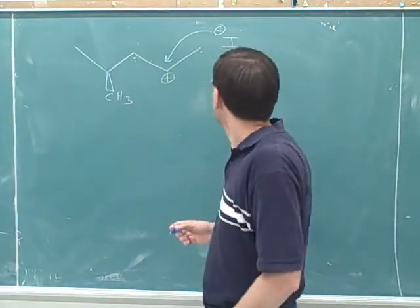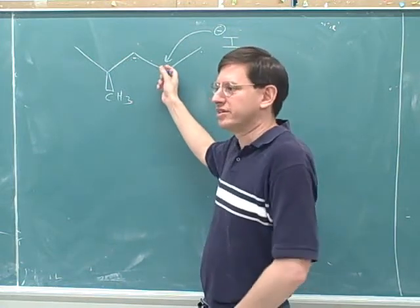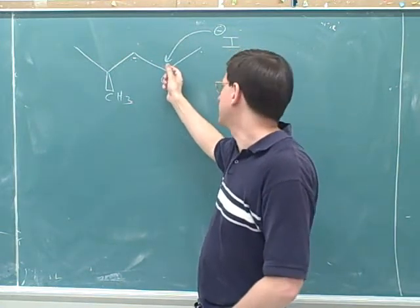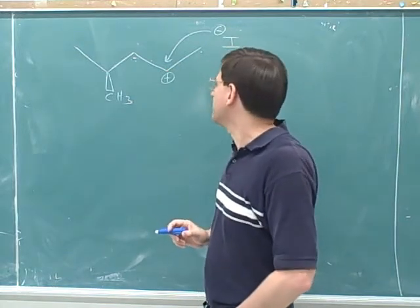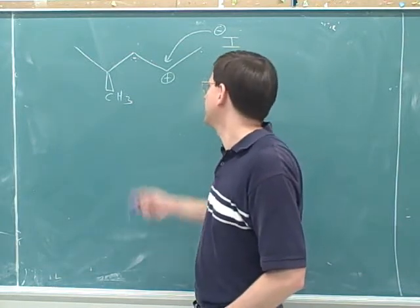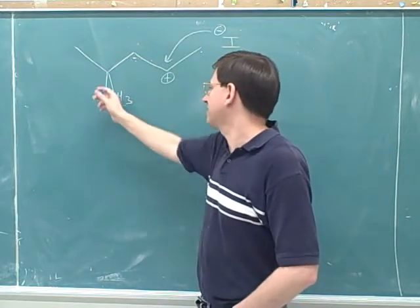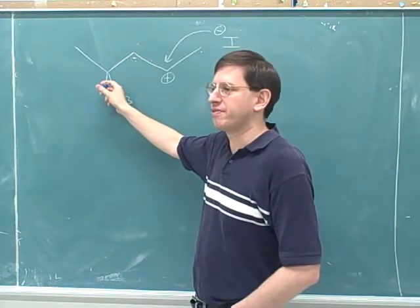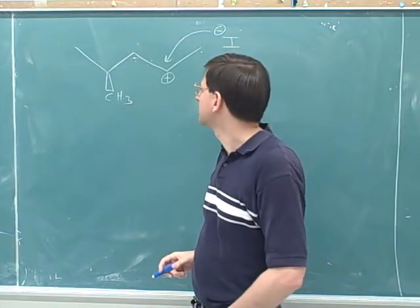So to answer your question, this is trigonal planar and we know with trigonal planar we would normally expect the iodide can attack from either face. However, we know that it might not be able to attack from a face that's sterically hindered. And in the lecture notes they said neither face is really sterically hindered. However, your point was it seems like this methyl group here is pointing out in front and blocking the front.